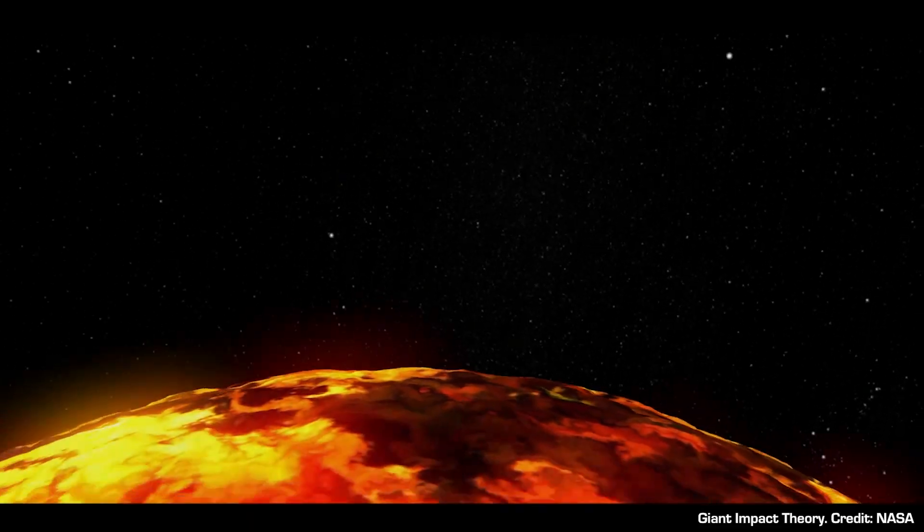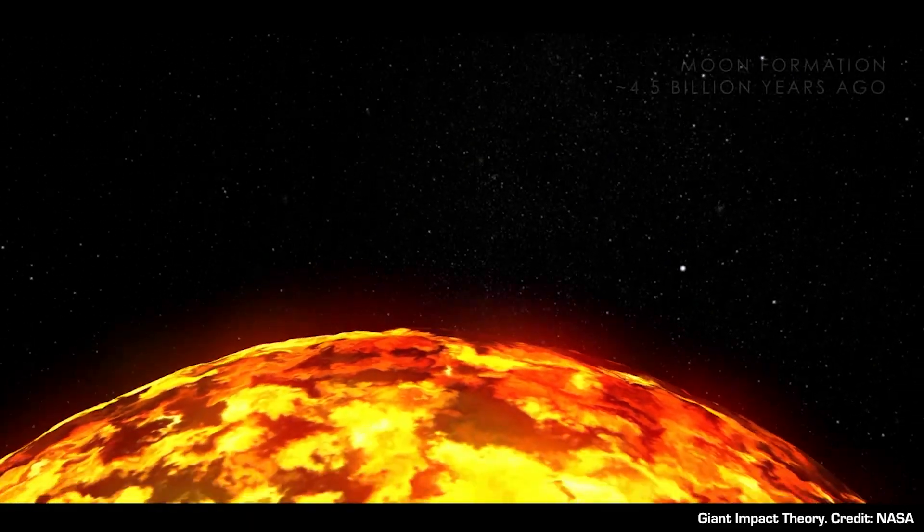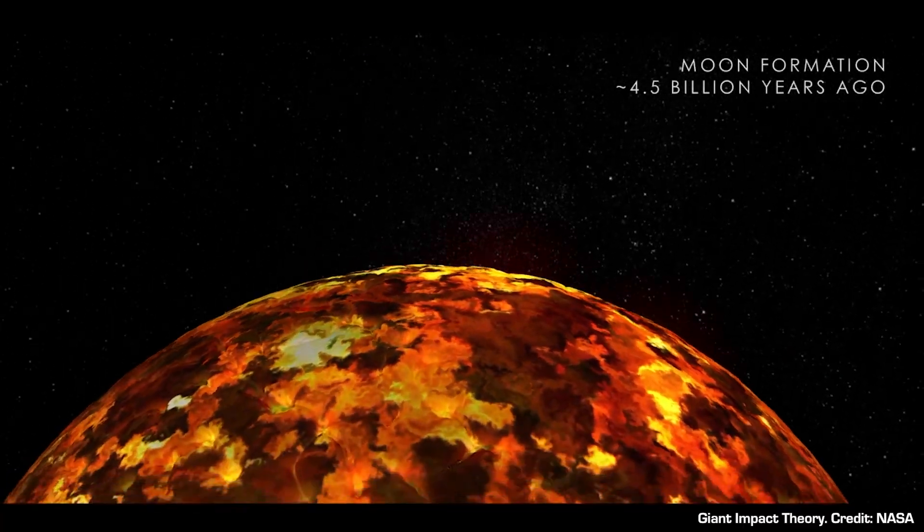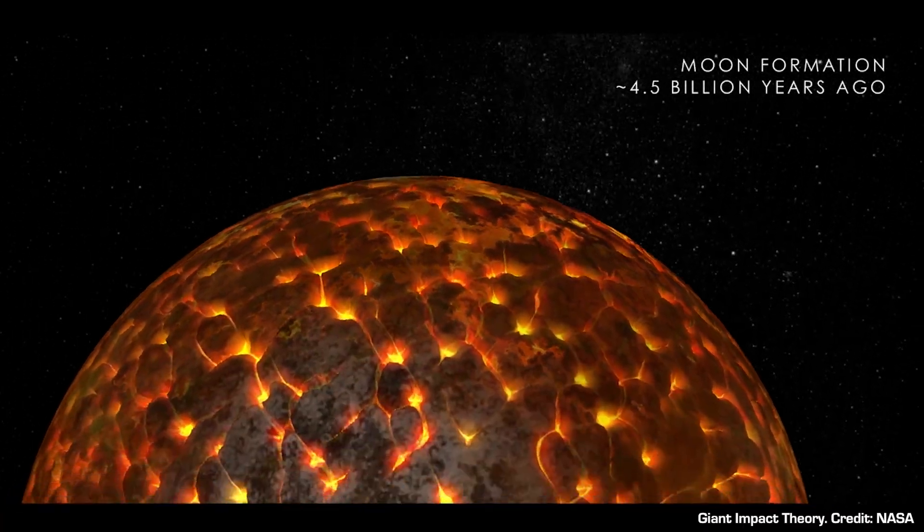The most widely accepted theory is that the Moon was formed when a Mars-sized object slammed into the Earth billions of years ago. This collision turned the newly forming Earth into a molten ball of rock again and ejected material into orbit. Most of the material crashed back into the Earth, but some collected together from mutual gravity to form the Moon we have today.